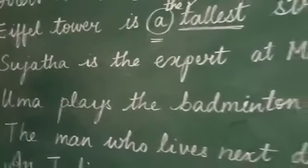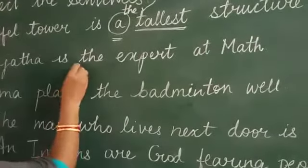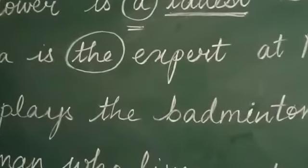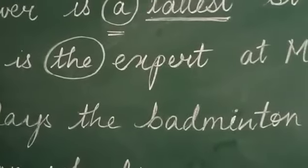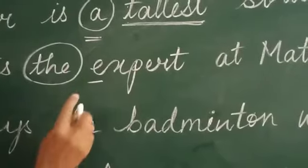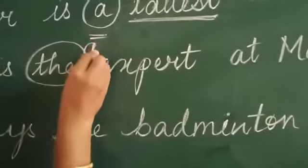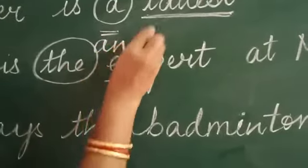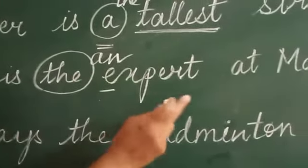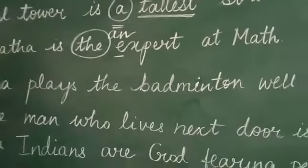Next: 'Sujata is the expert at math.' Will we use 'the' before 'expert'? 'Expert' has a vowel and a vowel sound, so we are going to use 'an'. The correct sentence is: 'Sujata is an expert at math.'